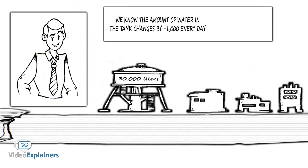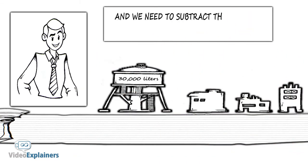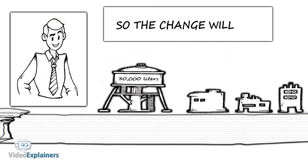We know the amount of water in the tank changes by negative 1,000 every day. And we need to subtract that three times to go back three days. So the change will be negative 3 times negative 1,000 equals positive 3,000.